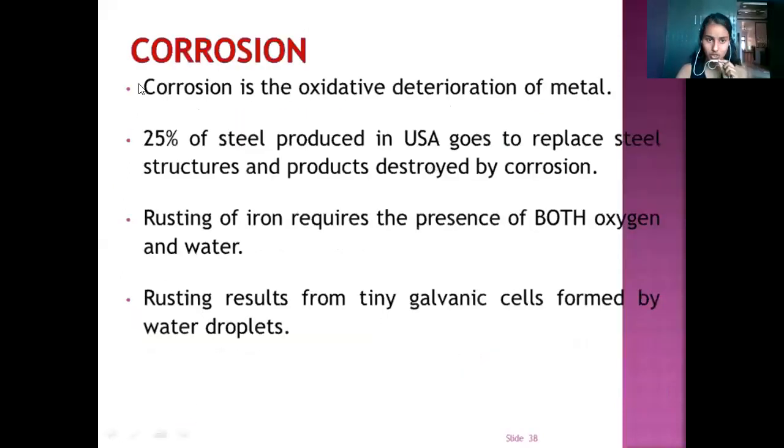Next topic is corrosion. Corrosion is the oxidative deterioration of metal. 25% of steel which is produced in USA goes to replace steel structures and products destroyed by corrosion. Rusting of iron requires both oxygen and water. Rusting results from tiny galvanic cells formed by water droplets.